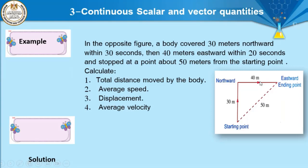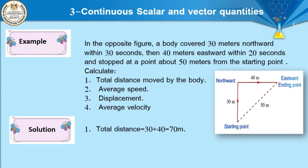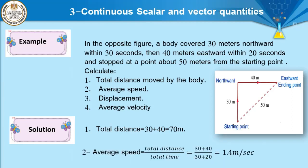Number two, average speed: we need total distance and total time. Total time is 30 seconds plus 20 seconds equals 50 seconds. Average speed equals total distance divided by total time: 70 over 50 equals 1.4 meters per second.